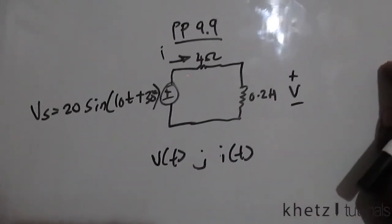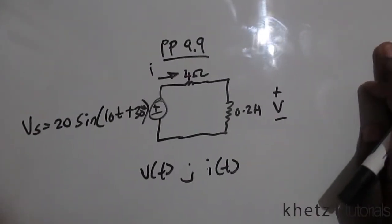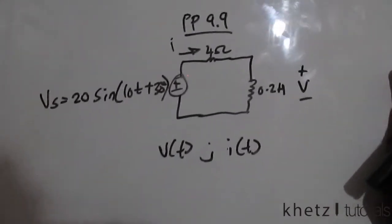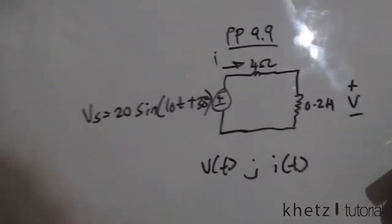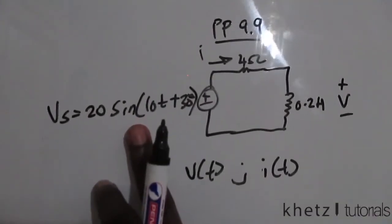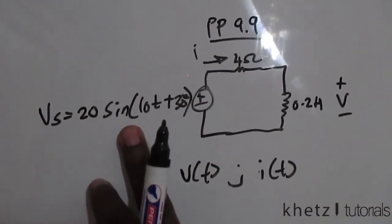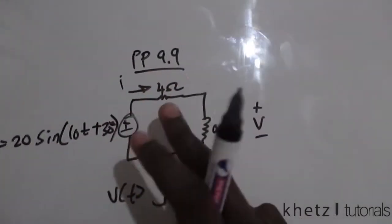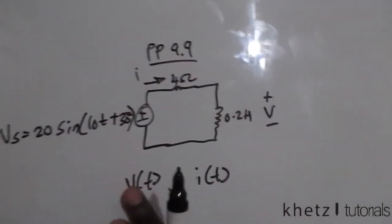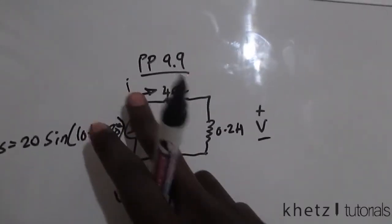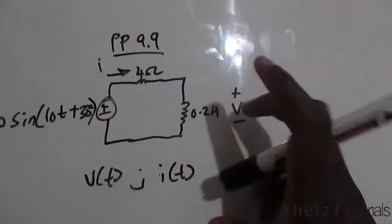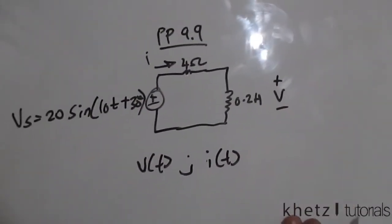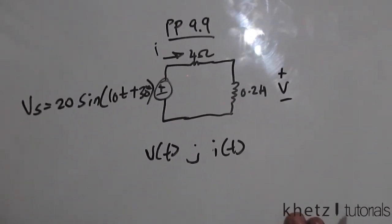Welcome to CAT tutorials. In this video I'll be doing practice problem 9.9. We're given a sinusoidal voltage of this form and we are asked to find v(t) and i(t), where i(t) is the current and v(t) is the voltage across the inductor.